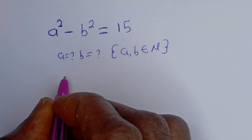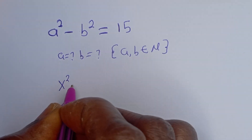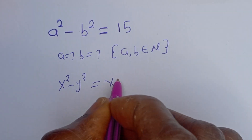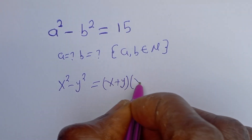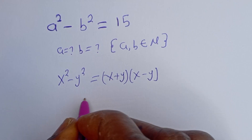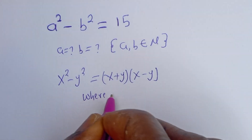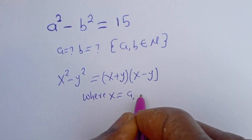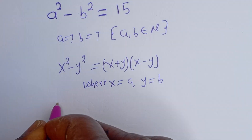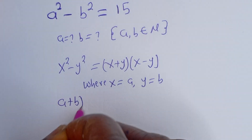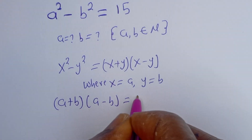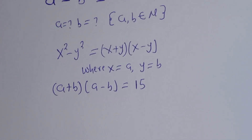Now here, if you look at this, this is the form of a difference of squares. That is, if you have x² - y², this is equal to (x + y) multiplied by (x - y). Then from here, where x is equal to a and y is equal to b, so let's substitute. We have (a + b)(a - b) = 15.